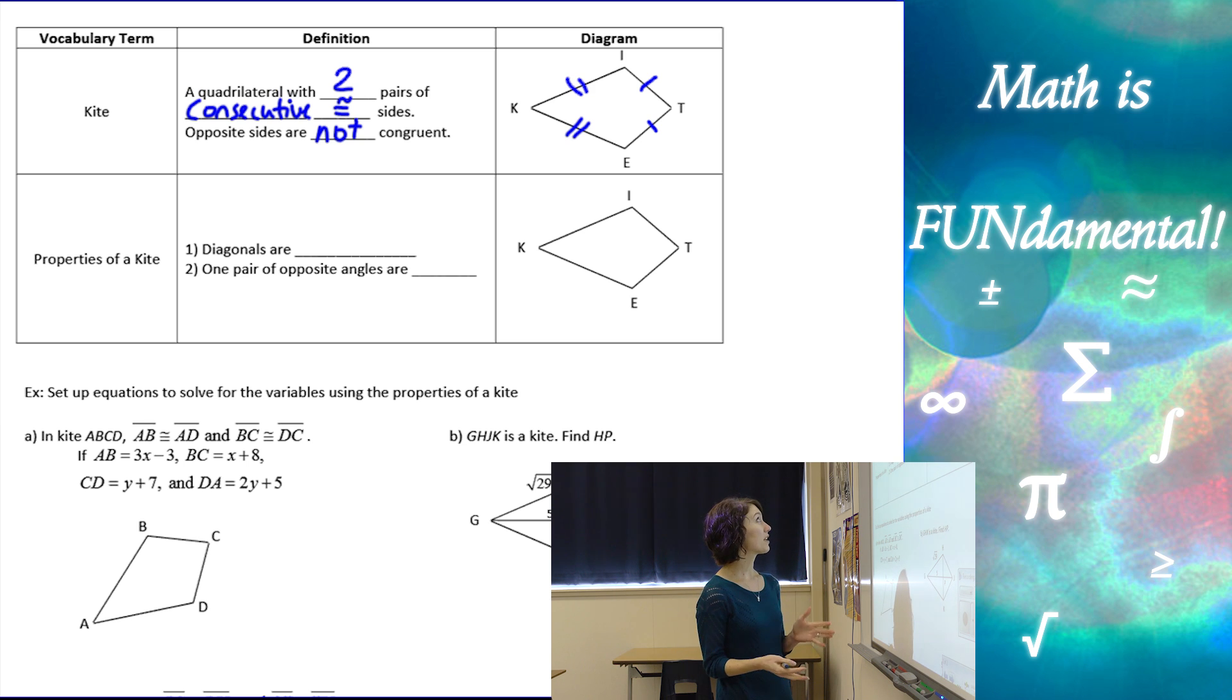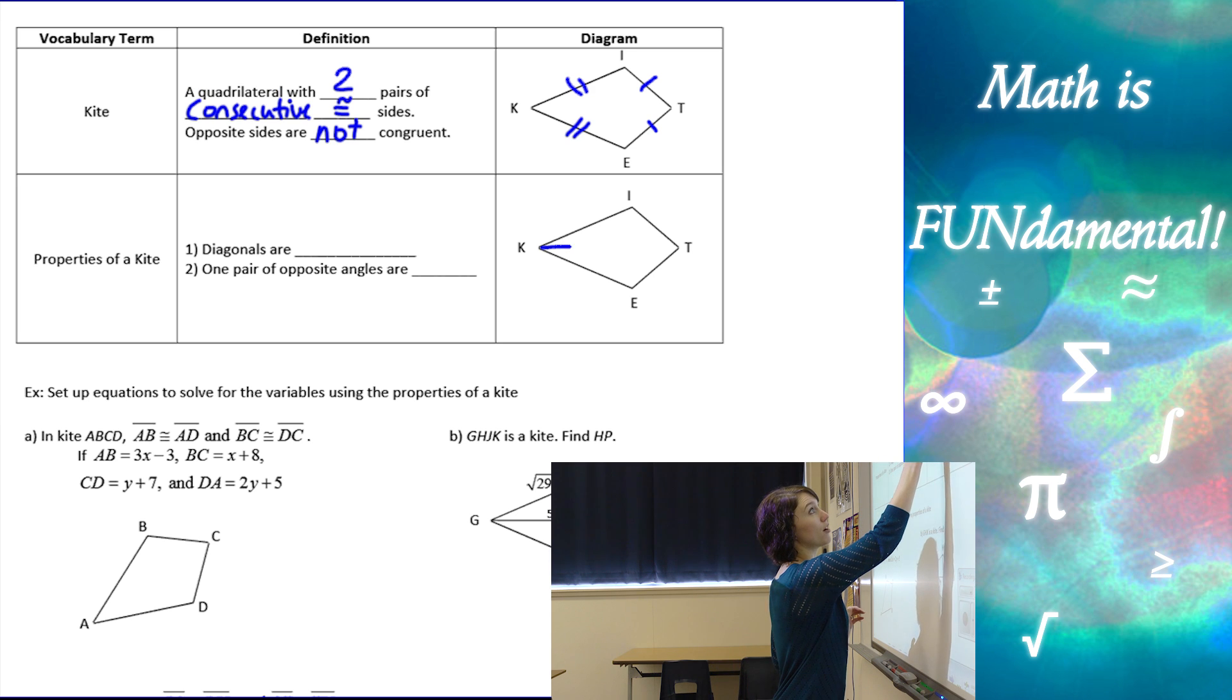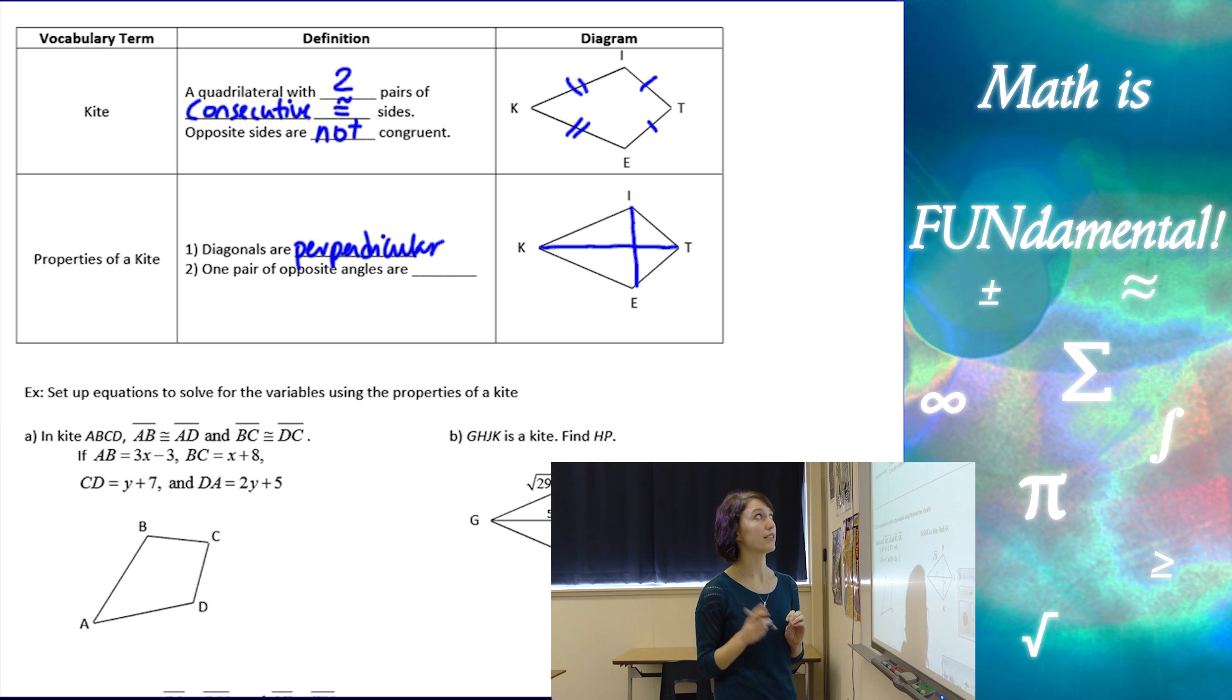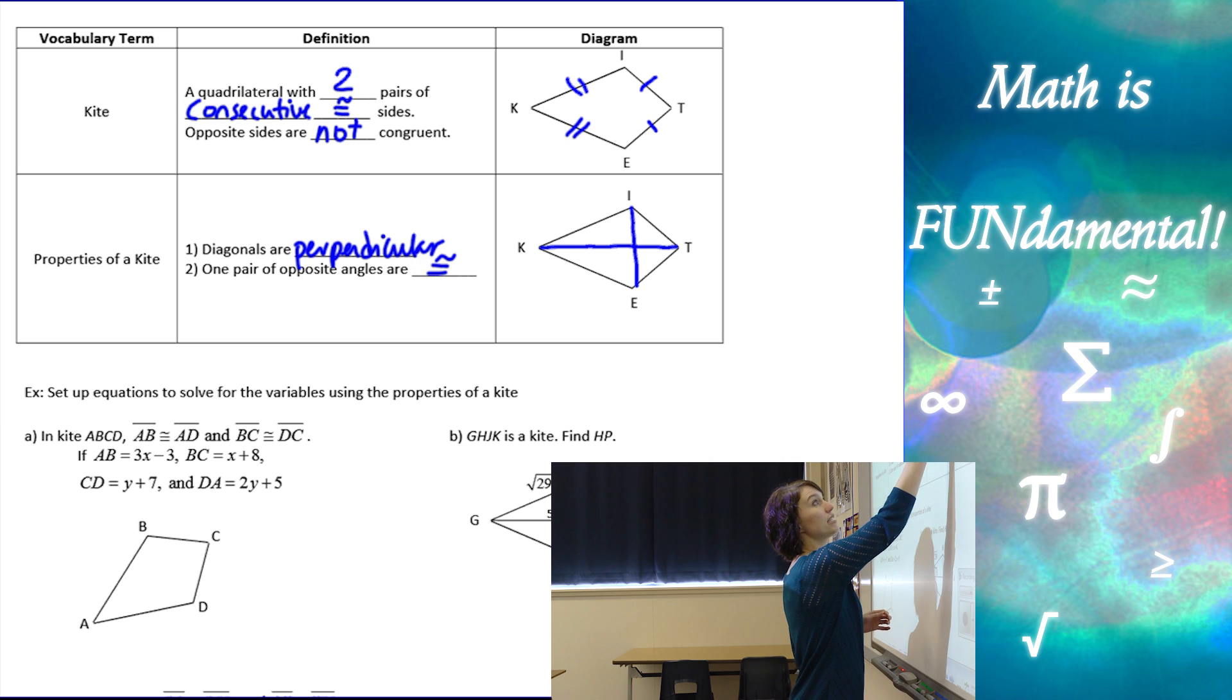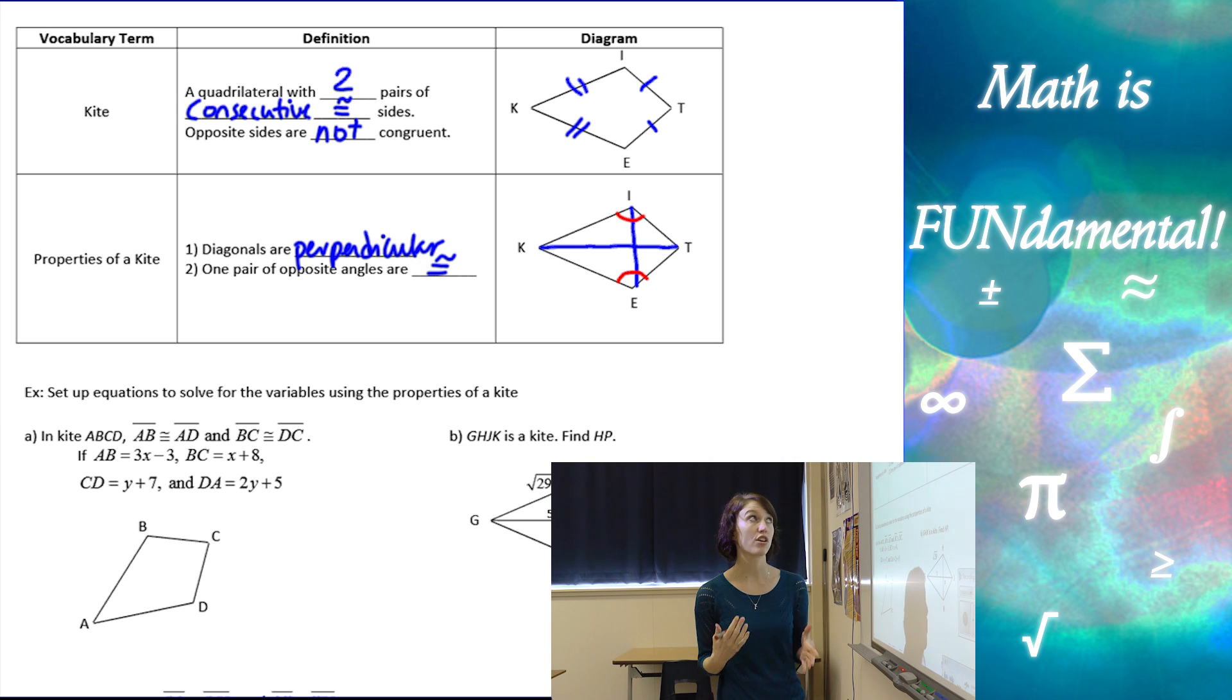Now, properties of a kite, that was our definition. Properties is that the diagonals of a kite, if we draw our diagonals, and look at those, diagonals are going to be perpendicular, and one pair of opposite angles are congruent, but only one pair, and it happens to be this pair here. The other pair of angles are not going to be congruent, so be careful.